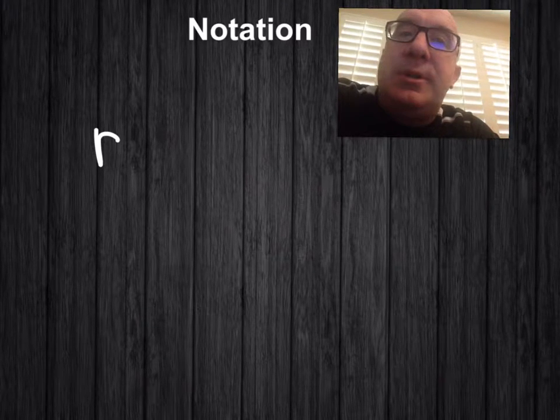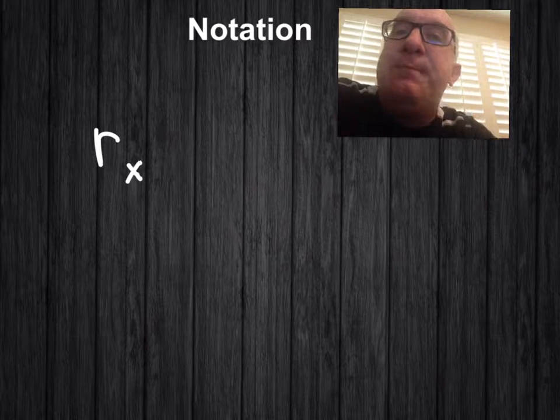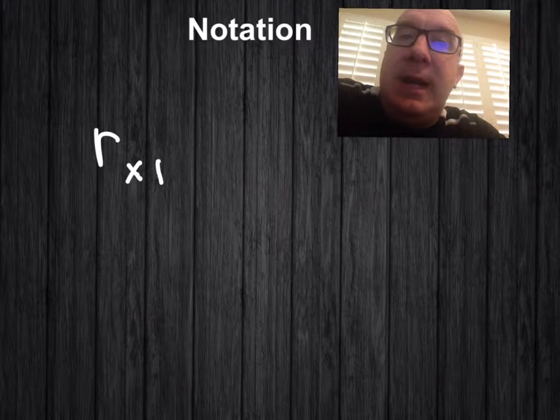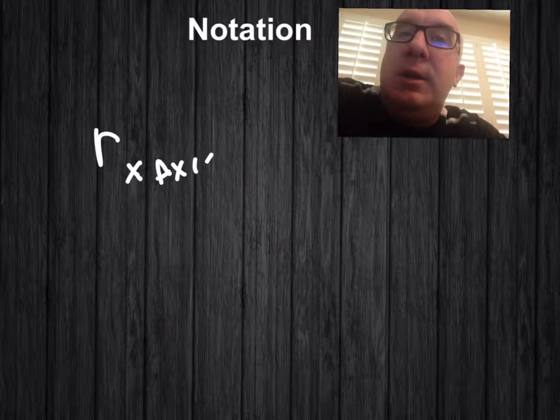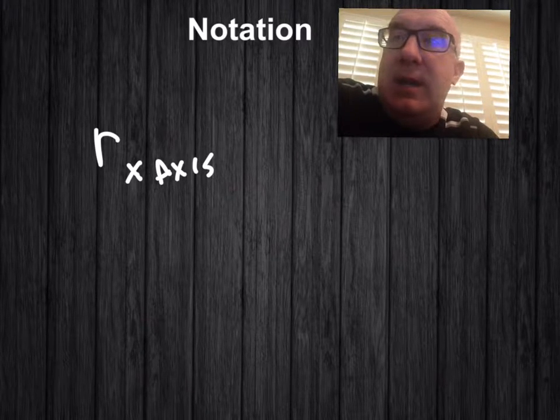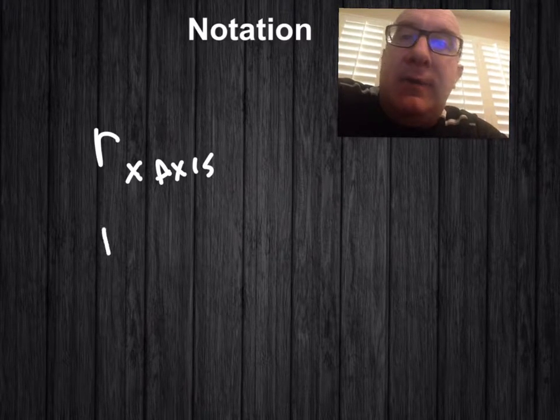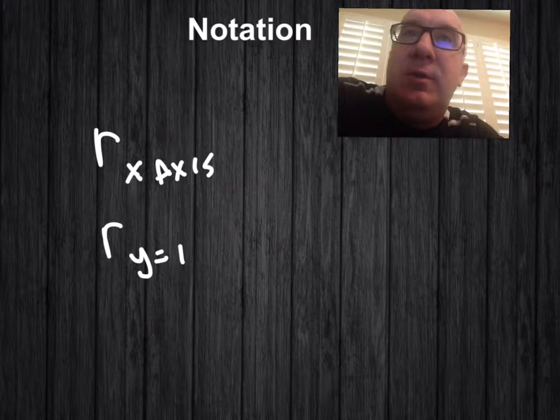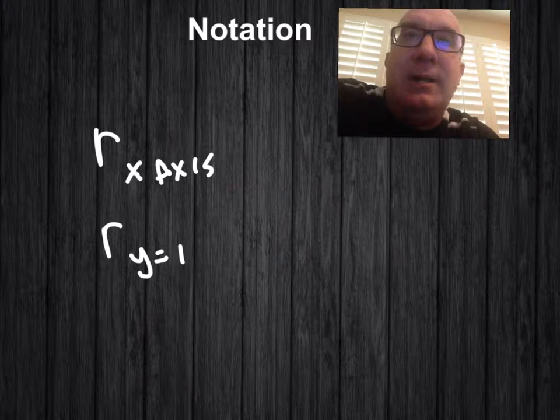What really helps you to know what's going on is its subscript. If it just says the x-axis, then you know you're reflecting over the x-axis. If it's r of y equals 1, you're reflecting over the y equals 1 line and so on.